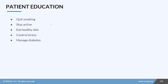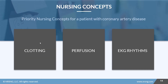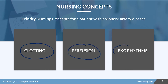It's important to educate patients to quit smoking, stay active, eat healthy, control their stress, and manage their diabetes, as these can all lead to complications with coronary artery disease. Our primary nursing concepts include clotting, perfusion, and EKG rhythms.